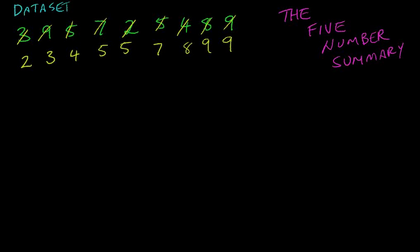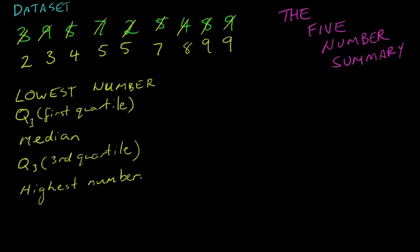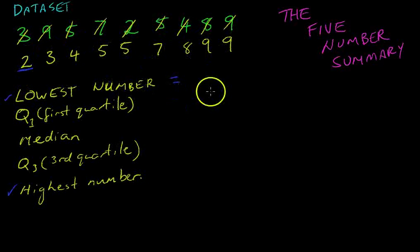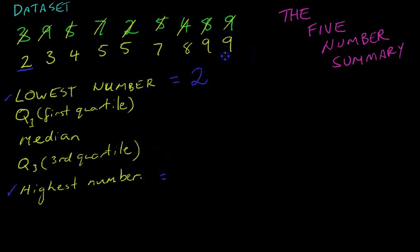Now the five-number summary is five particular numbers and we're going to go through each of them. Here's our five-number summary: the lowest number and the highest number. Those two are really easy. The lowest number in our data set is the number 2, and the highest number in our data set is the number 9.